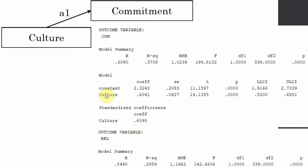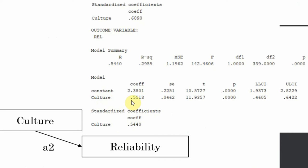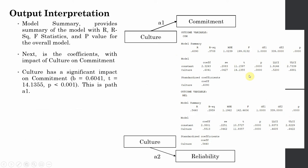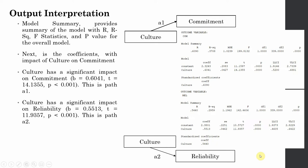Culture has a significant impact on commitment because the p-value is less than 0.05 and there is no zero between the lower and upper confidence intervals. The impact of culture on reliability is also significant with p-value less than 0.001 and no zero in the confidence interval. These give you the a1 and a2 coefficients: a1 = 0.6041 and a2 = 0.5513.